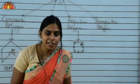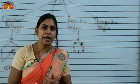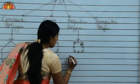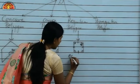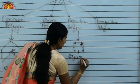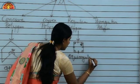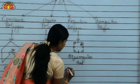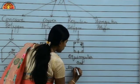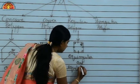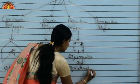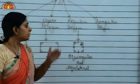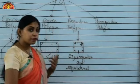So, regular polygons are equiangular and equilateral. We can say that the regular polygon is equiangular and equilateral. Now, what is an irregular polygon?